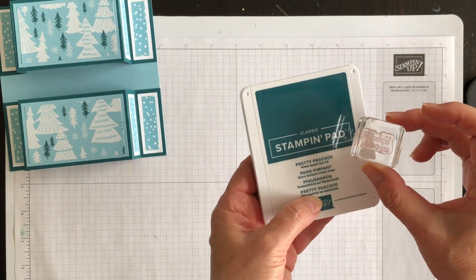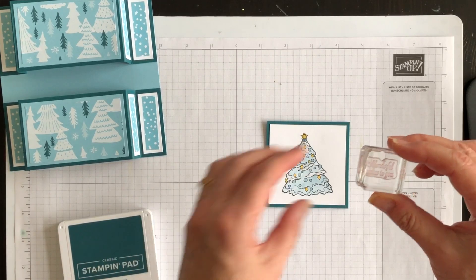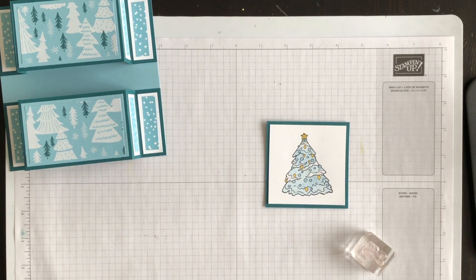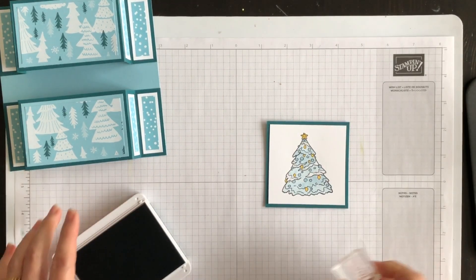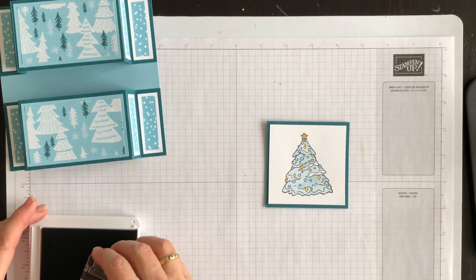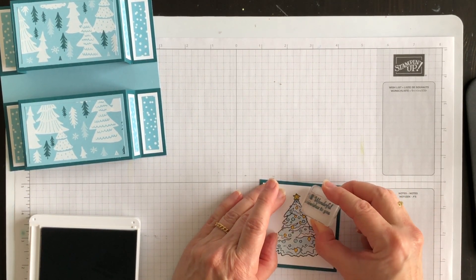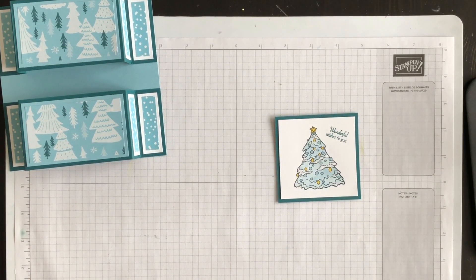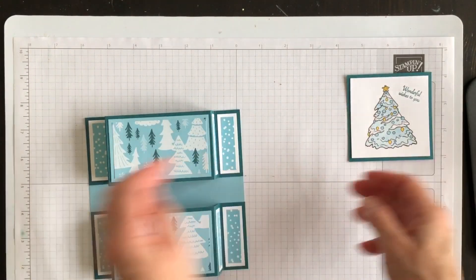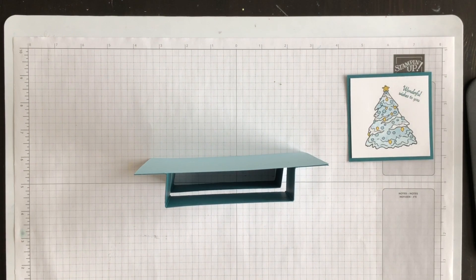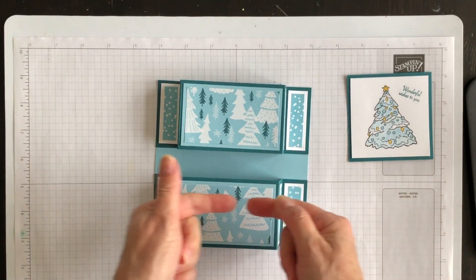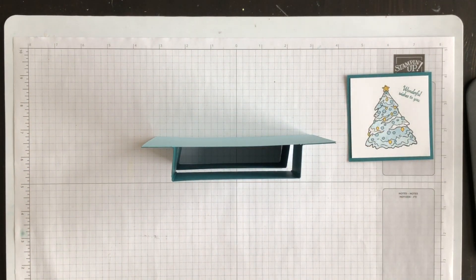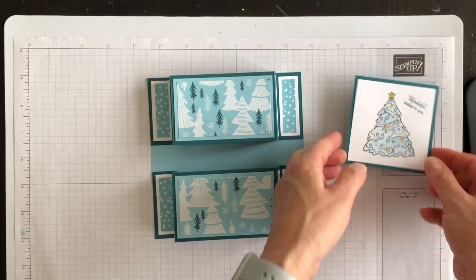Now the next thing I want to do is bring in my Pretty Peacock ink and in the Shop the Town stamp set there is this phrase that says wonderful wishes to you. So let's add that phrase to this panel. And there we go. Now what we're going to do is we're going to attach this panel to the fun fold. Now before we do that let me show you something so super cool. Remember I said to make sure that you attach this panel at the very bottom of the base? Well if you do that then this fun fold stands up vertically which I think is awesome.